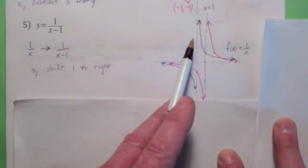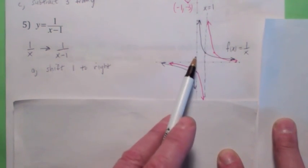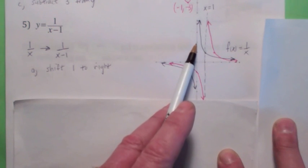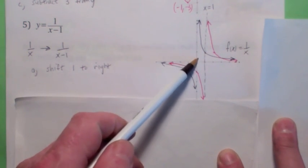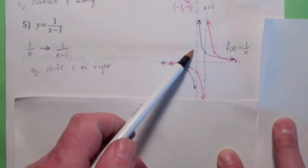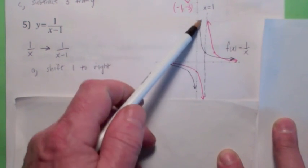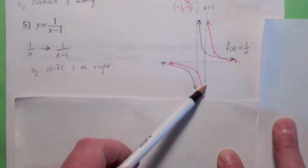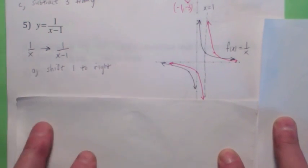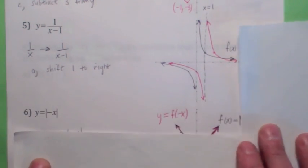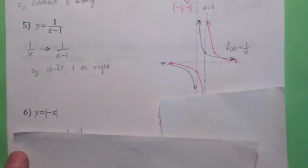Now, what also gets shifted 1 unit to the right is the vertical asymptote. There was a vertical asymptote at x = 0. When you shift everything to the right, the vertical asymptote becomes x = 1 now. All right, try this one — this one isn't too hard.